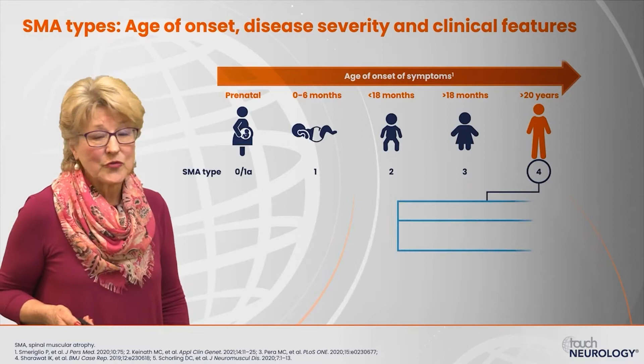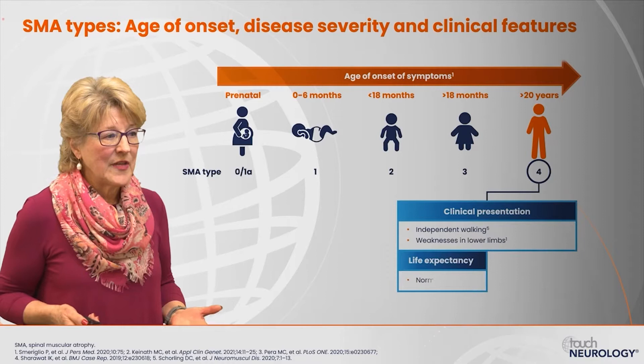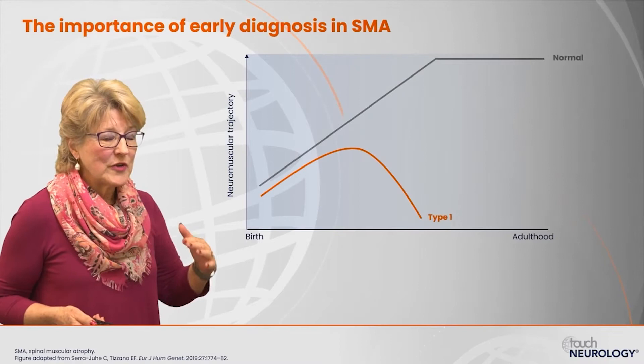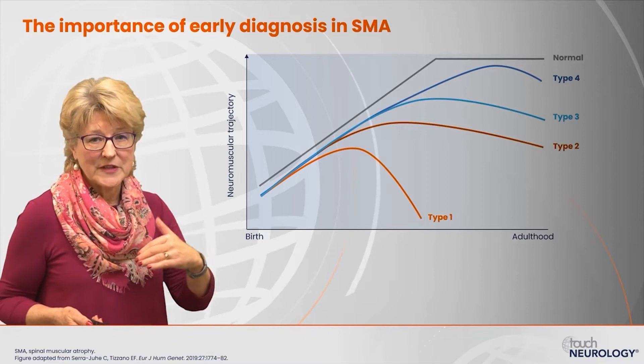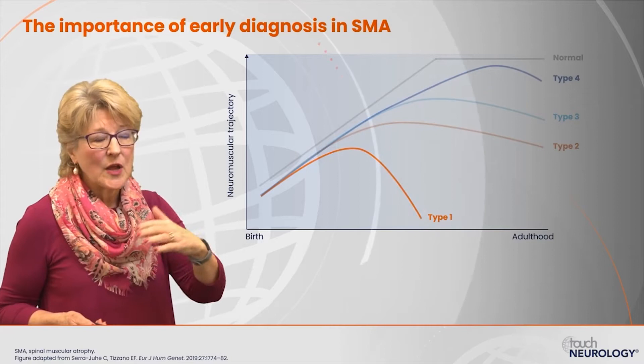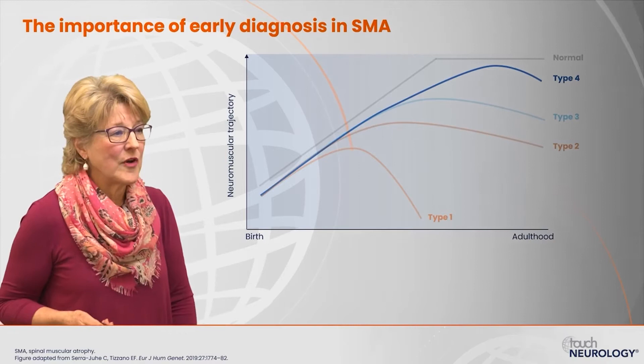Type 4 patients represent only about 5% of cases. They have a normal life expectancy and will walk independently, but over time may develop weakness in their lower extremities. The trajectory for these different SMA types varies based on phenotype — type 1 patients have a very rapid decline in strength, whereas type 4 patients have a much slower loss of muscle strength presenting later in time.